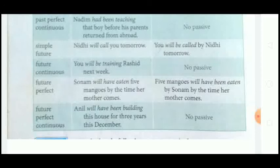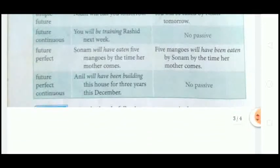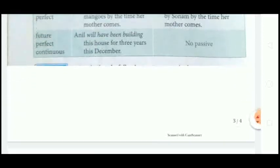Future Perfect: Active — 'Sumona will have eaten five mangoes by the time her mother comes'; Passive — 'Five mangoes will have been eaten by Sumona by the time her mother comes.' Future Perfect Continuous: 'Anil will have been building this house for three years this December' — this is an intransitive construction, so there is no passive sentence for that.